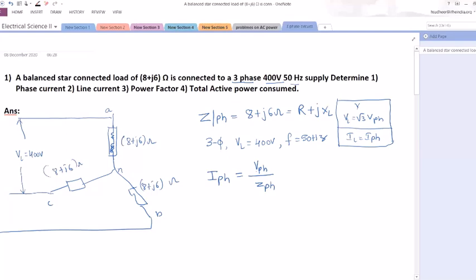Most of the students will go wrong. They will simply use 400 by this one. Actually, it is Vphase by Zphase. Because it is a balanced load, no need to separately find out VAN, VBN, VCN and calculate IAN because all the currents will be same and only the currents will be lagging behind with each other by 120 degrees. So now we need to find out first phase voltage.